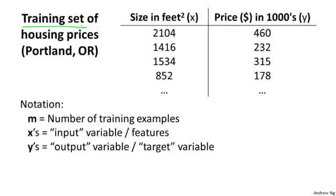Let's define some notation that we're using throughout this course. I'm going to define quite a lot of symbols. It's okay if you don't remember all the symbols right now, but as the course progresses, it'll be useful to have a convenient notation. So I'm going to use lowercase m throughout this course to denote the number of training examples. So in this dataset, if I have, let's say 47 rows in this table, then I have 47 training examples and m equals 47.